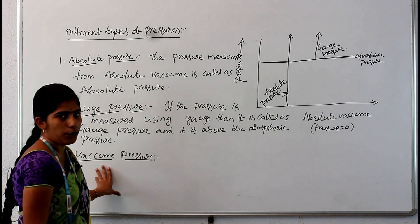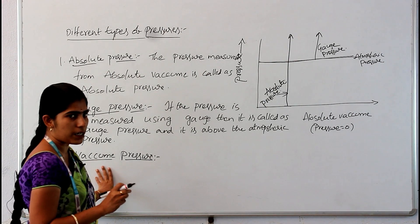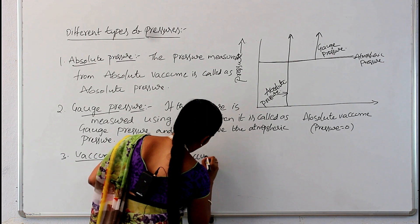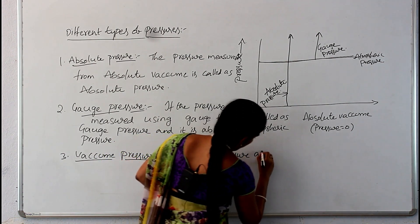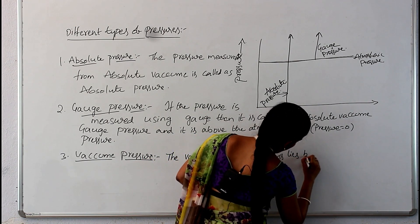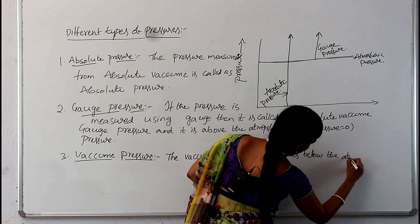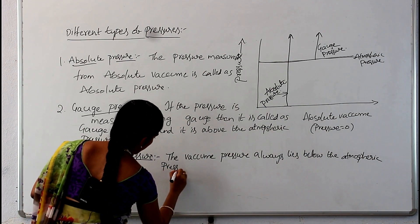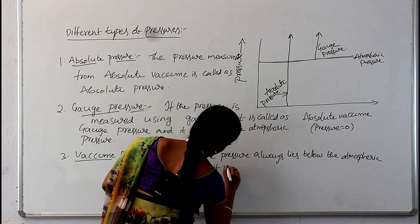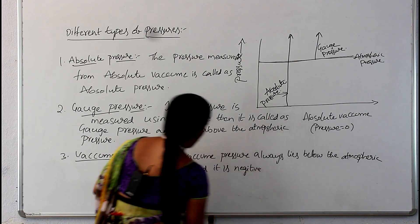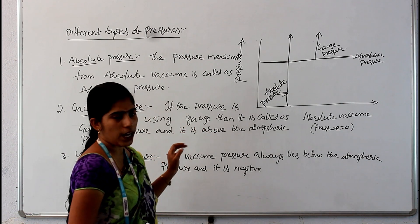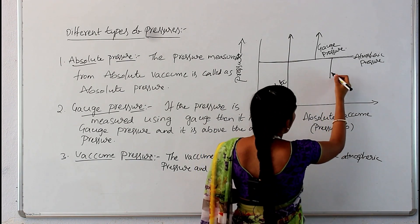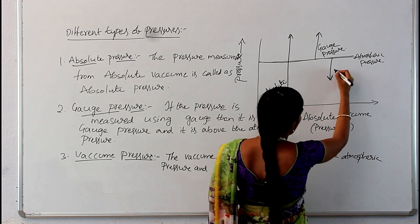Vacuum — the name itself says it is a vacuum, meaning there is no pressure present. And if at all any pressure is present, that value is also negative. The vacuum pressure always lies below the atmospheric pressure and its value is negative. So here atmospheric pressure will be there, and if you want to find out the vacuum pressure, that vacuum pressure should come below the atmospheric pressure — the direction is in this way. This is vacuum pressure.